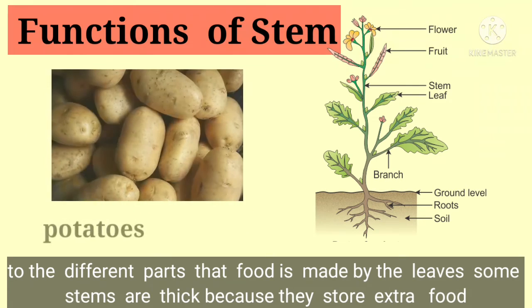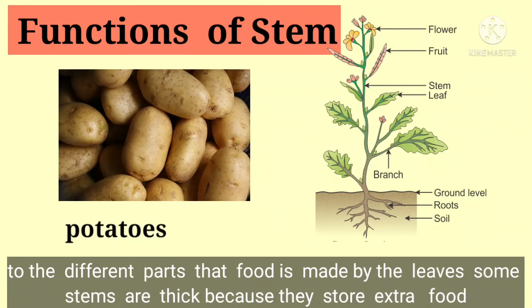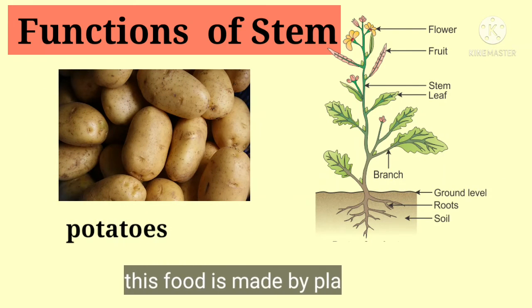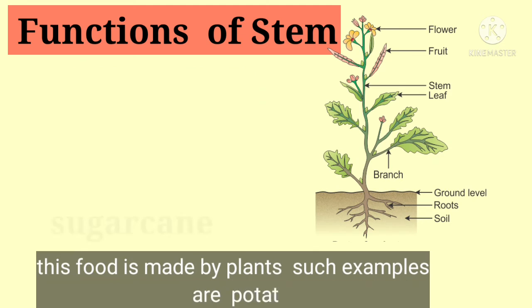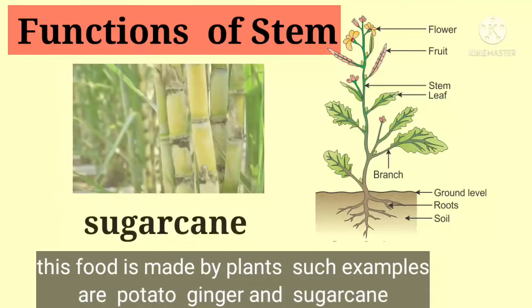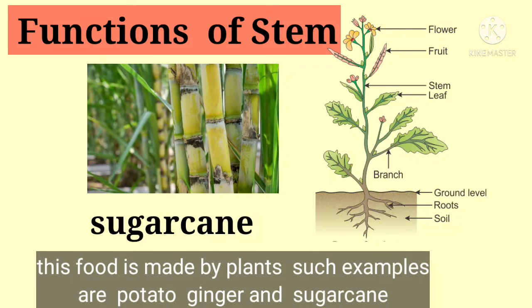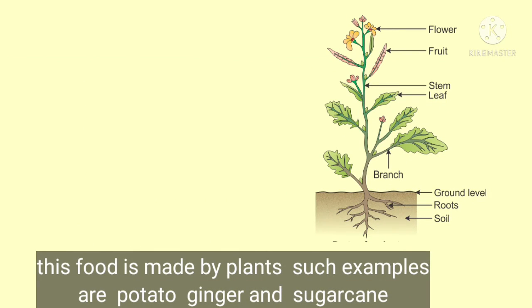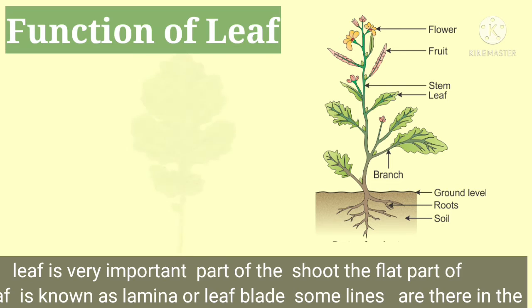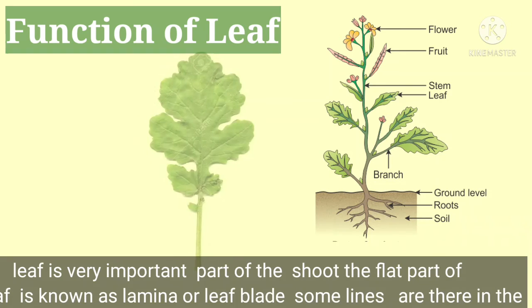Some stems are thick because they need to store extra food. This food is made by plants. Examples of such stems are potato, ginger and sugar cane.